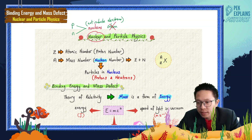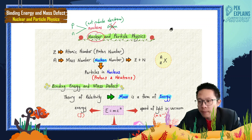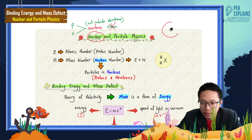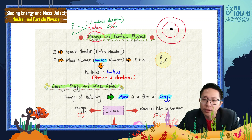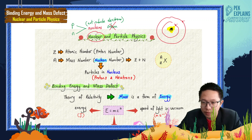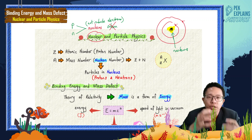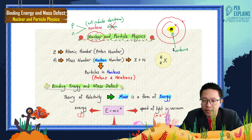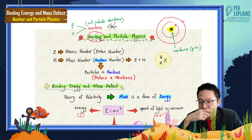If you are talking about the atom, the atom actually has a nucleus in the middle, and then you have electrons orbiting around it. But we are not talking about the electrons. We only focus on the nucleus at the middle, which has protons and neutrons.